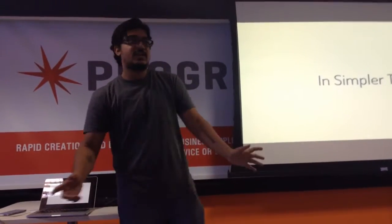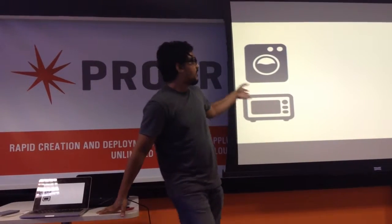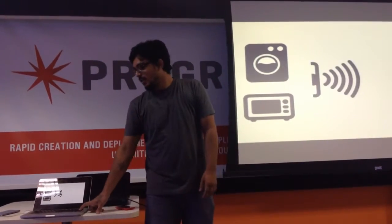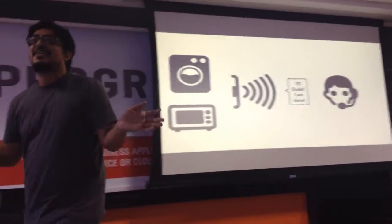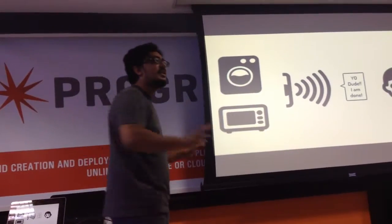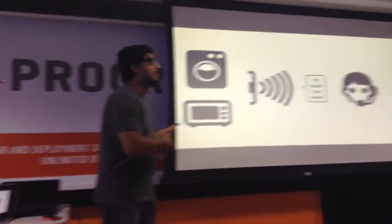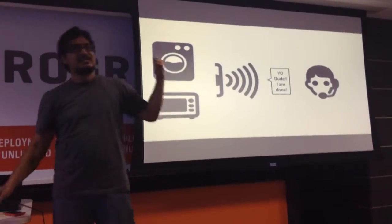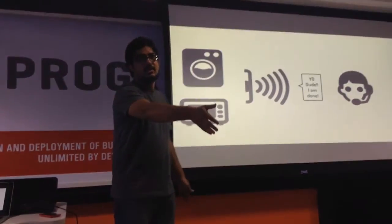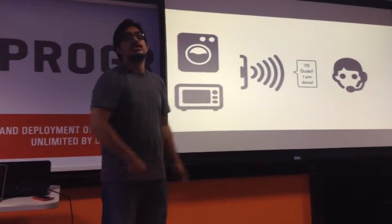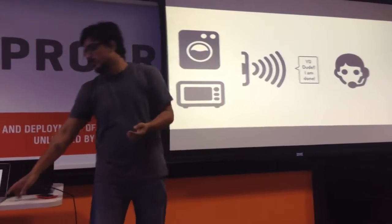What exactly is Internet of Things? It's when your washing machine or your oven calls you up and tells you, 'Yo dude, I'm done.' This is all Internet of Things is about. What you guys are going to do in the next two days is take a chair, put a weight sensor on it, so that you can see who is sitting on it wherever you are in the world. That's what IoT is all about.